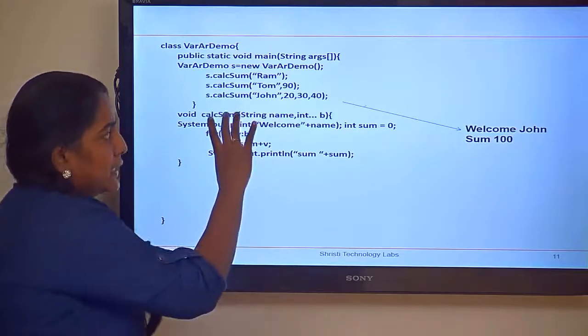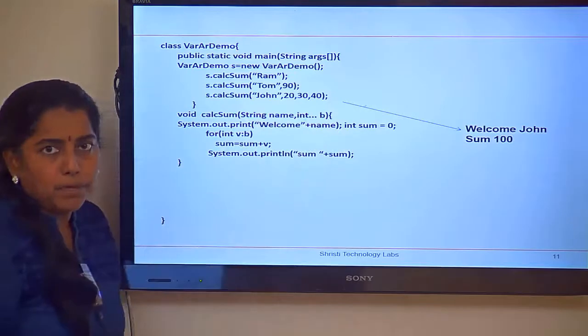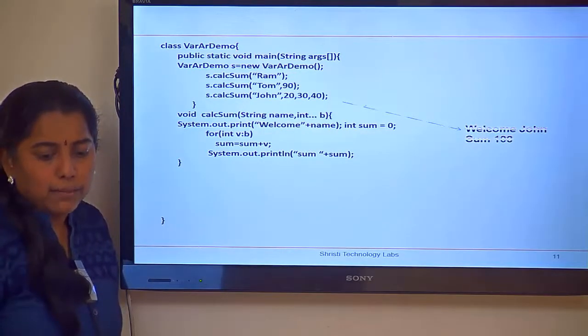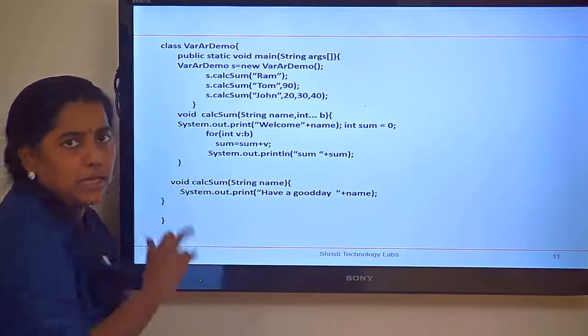I hope this part is clear. So, this is a method having a variable argument. You have learnt about the concept of overloading. What if I am having one more method? Having, taking string name as argument.